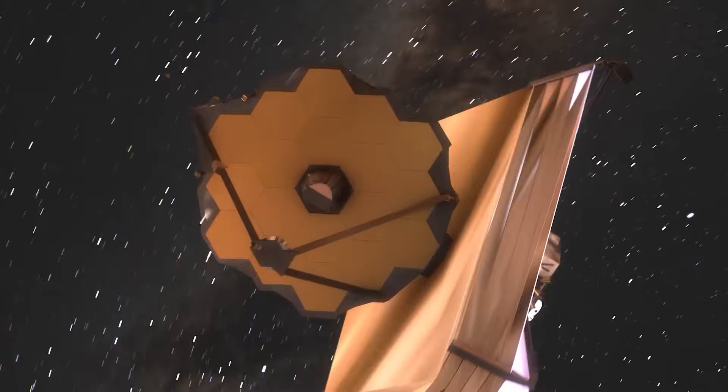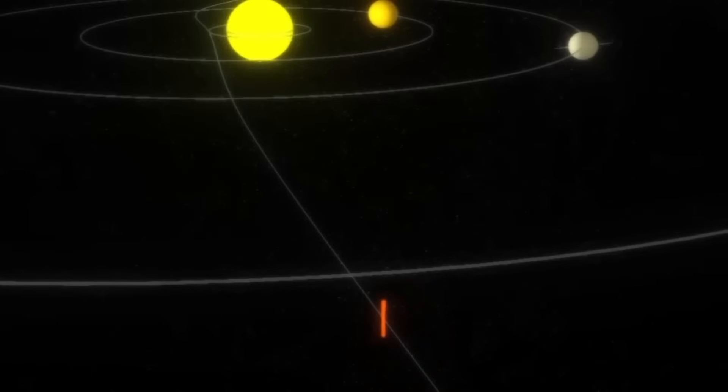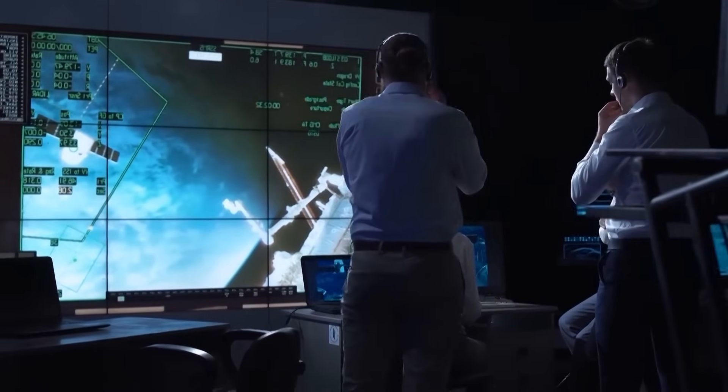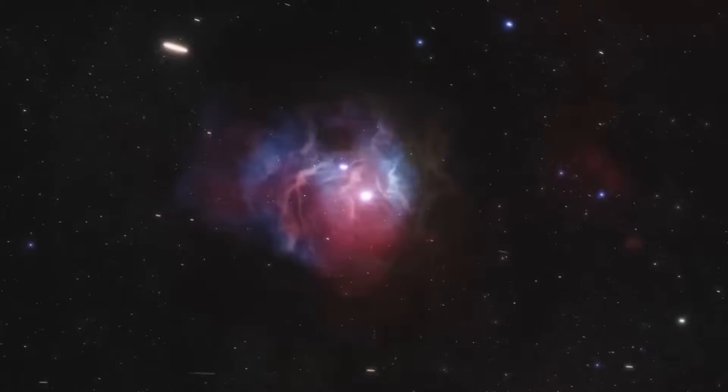The James Webb Space Telescope, with its unmatched infrared sensitivity, has been tracking 3I-ATLAS since its discovery. Unlike ground observatories, Webb can detect subtle outgassing—jets of CO2 and water vapor—that alter a comet's trajectory.